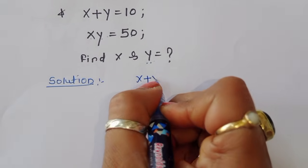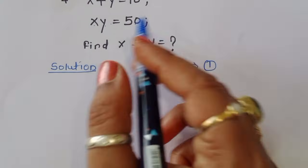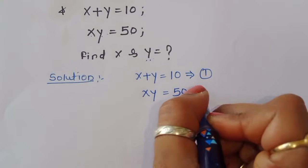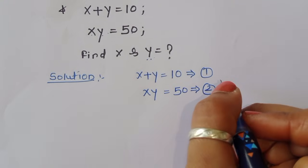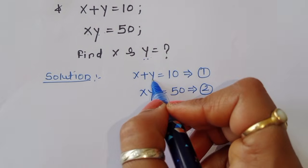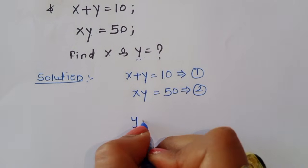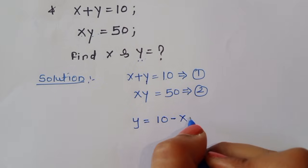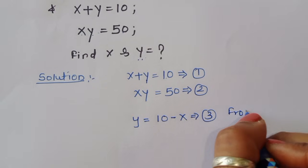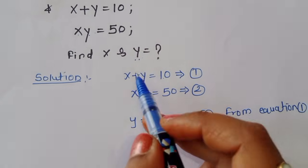The first equation is x plus y is equal to 10 — this is equation number 1. The next one is x times y is equal to 50 — this is equation number 2. From equation 1, we can write y is equal to 10 minus x. This is equation 3.